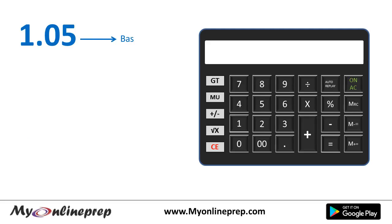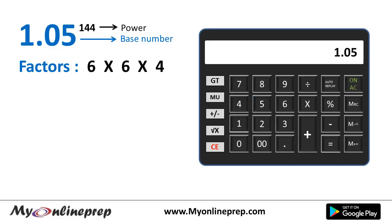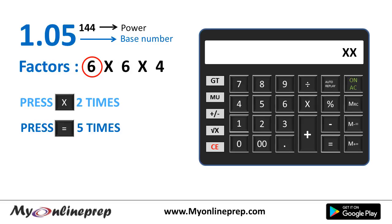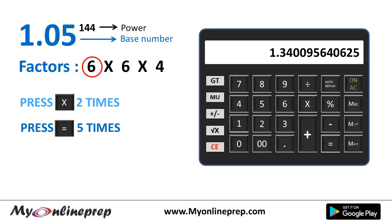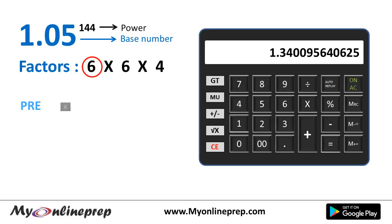The base number is 1.05 — type 1.05 on the calculator. Now listen carefully: after pressing the base number, press the multiply button 2 times. The first factor is 6, so we press the equals button 5 times — that is one less than the factor number. Press equals: 1, 2, 3, 4, and 5.